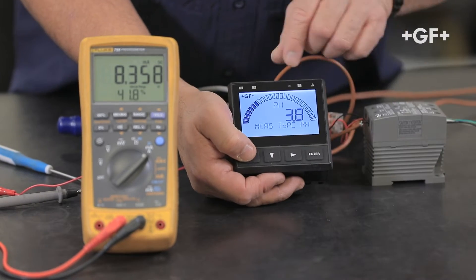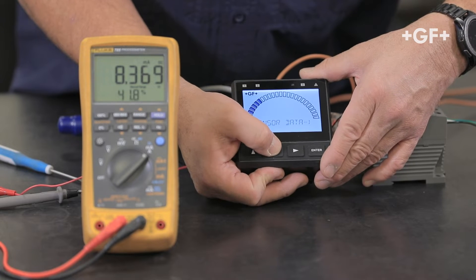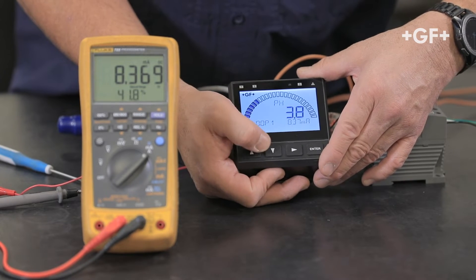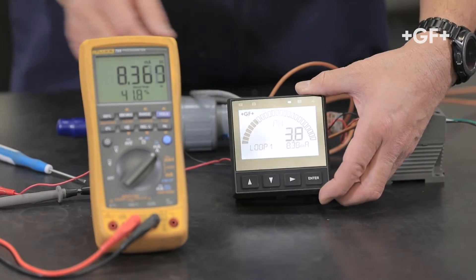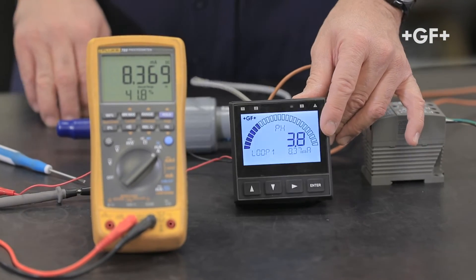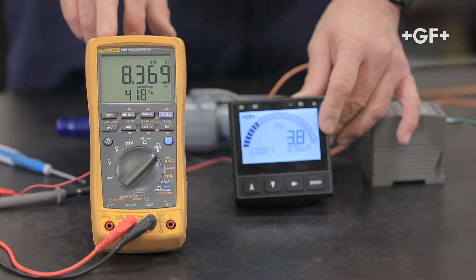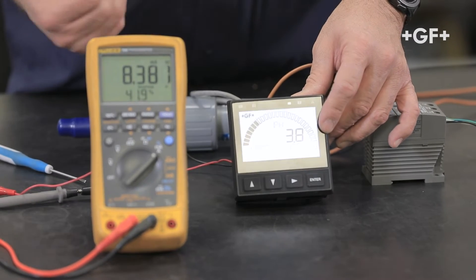Okay, so right now we're showing 3.8 pH and our output, our loop one output, is 8.37 milliamps, and that should be showing here on the screen. So if this was a PLC we would scale the PLC the same. This would be 4 milliamps at zero and 20 milliamps at 14 pH and then we would see a pH value there.